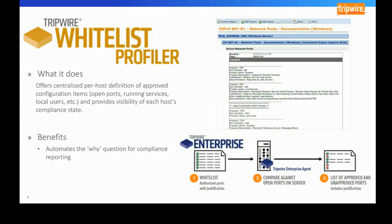At execution time, the Tripwire agent on the asset retrieves a list of all network ports and pulls them into the Tripwire Enterprise database. Whitelist Profiler extracts that information and compares it against the CSV whitelist. If it finds a port that is open and corresponds to an entry in the CSV file, it documents that in a report suitable to hand directly to your auditor. However, if it finds an unauthorized port, it flags it as an exception showing up on your dashboards for immediate drill down.